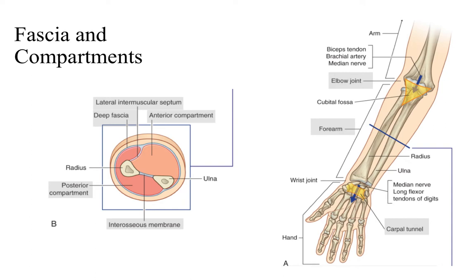When we talk about the forearm, we're talking about this area generally from the elbow joint and the cubital fossa to the wrist joint and the carpal tunnel. In anatomical position, the palm is facing forward and the hairless part of your forearm is also facing forward, whereas the part of your forearm that does have hair is facing posteriorly.